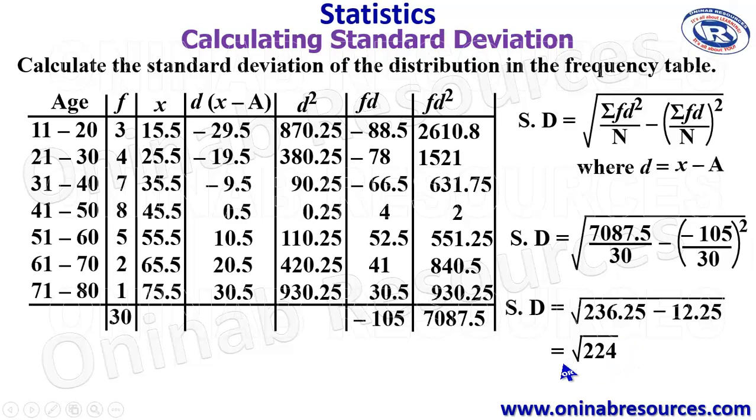So the square root of 224 gives 14.97 to two decimal places, which represents the standard deviation of this distribution. And that's the end of solution to this problem.